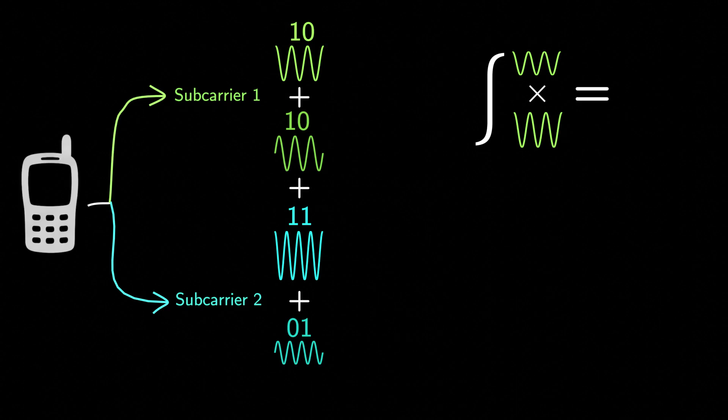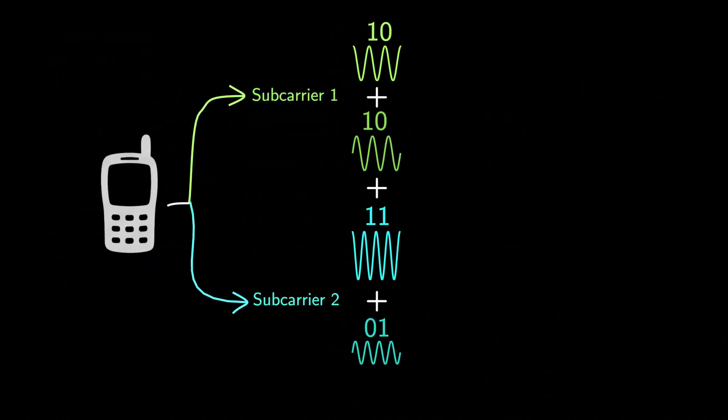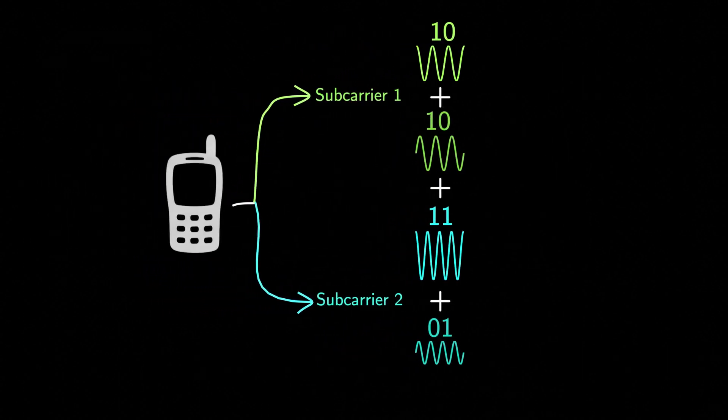The receiver repeats this process to find out the amplitude of every cos and sine waves until it decodes all bits. Alright, that's the theory. But how do we actually build an OFDM transmitter?